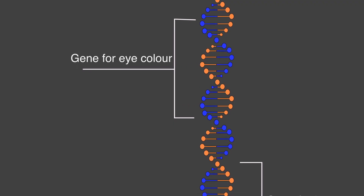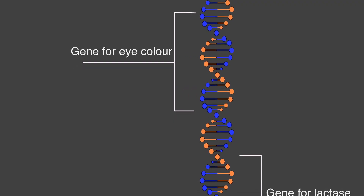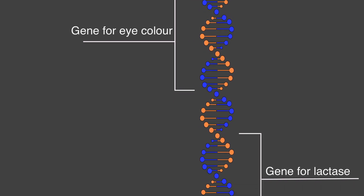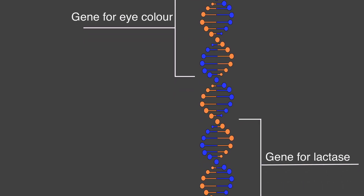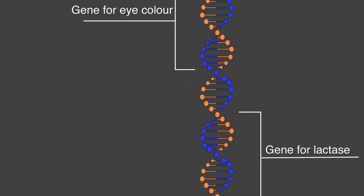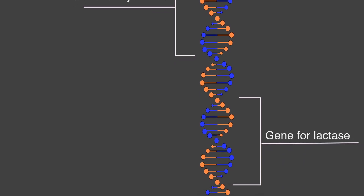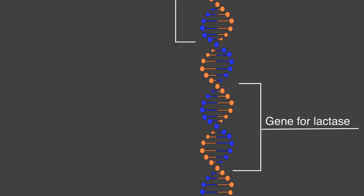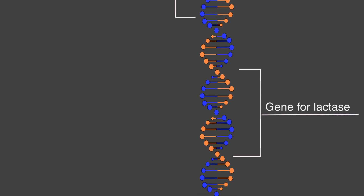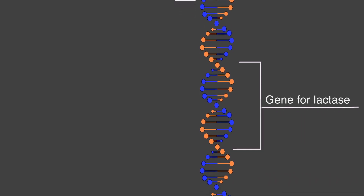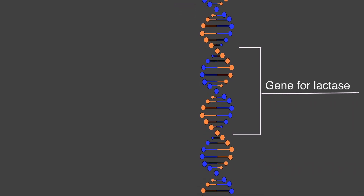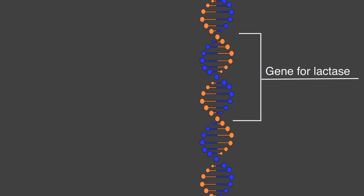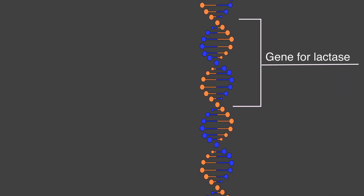The phenotype is determined by two factors. Genes play a very important role. All information about the construction of an organism is in the DNA. Short pieces of DNA code for certain properties — such a piece of code is called a gene. Genes are passed on from parent to child. The mechanisms behind this will be explained in future videos.